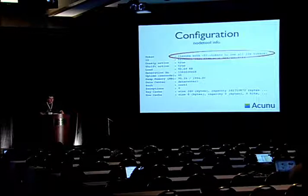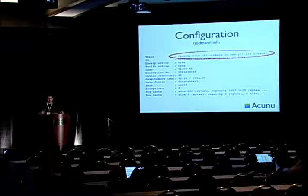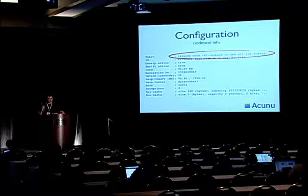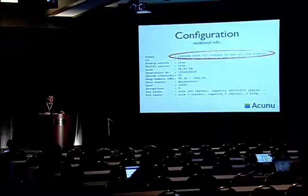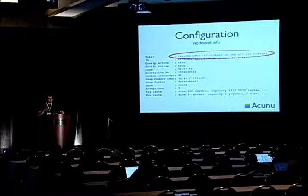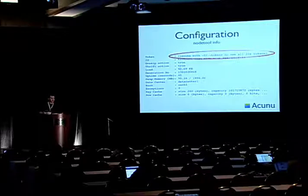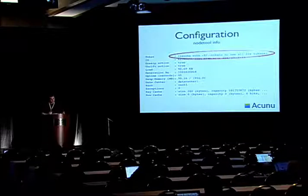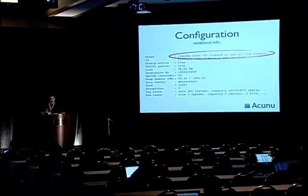A lot of small things change with having multiple tokens per node and having a large number like 256. We used to treat the token almost as the unique node identifier — because they were one-to-one and unique. Even an IP address you could change, but the token was always kind of the unique way of identifying a node, and we sort of displayed it prominently. This is the output of nodetool info — a pretty commonly run command to get a summary view of an individual node — but you can imagine trying to display 256 tokens. You'd just get scroll shock; it's not going to be very useful.